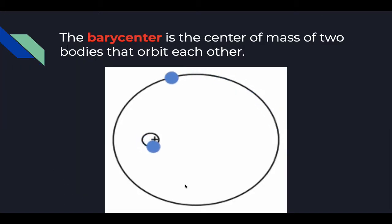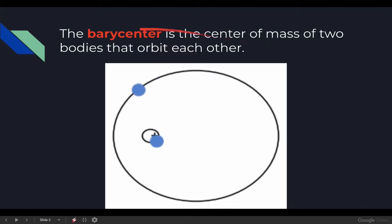Before we look at any equation we got to do a little bit of vocabulary. First vocabulary word is barycenter. Barycenter is defined as the center of mass of two bodies that orbit each other. So this would be like the larger orbiting body, this would be the smaller orbiting body, and this plus sign right here or these crosshairs would be the barycenter.